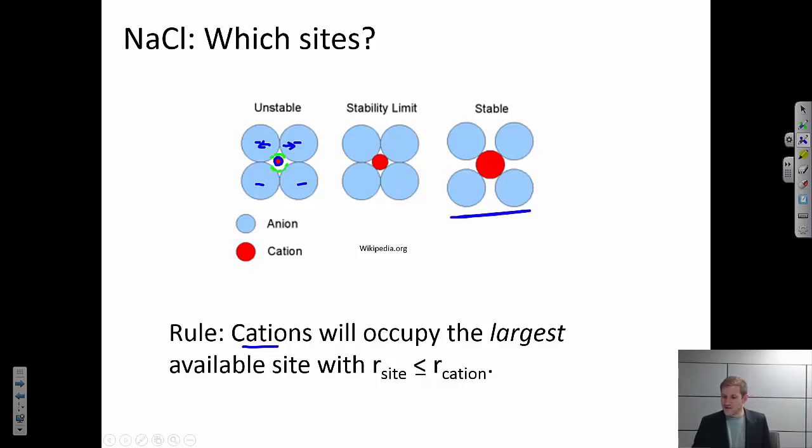On the other end, if we have a cation that's a little bit bigger than those anions, then it pushes all the anions out a little bit. And remember, the anion to cation interaction is attractive. And so this is a more stable configuration. There's an attractive energy between that cation and that anion, and the neighboring anions are being pushed apart from each other a little bit. So this is a stable configuration.